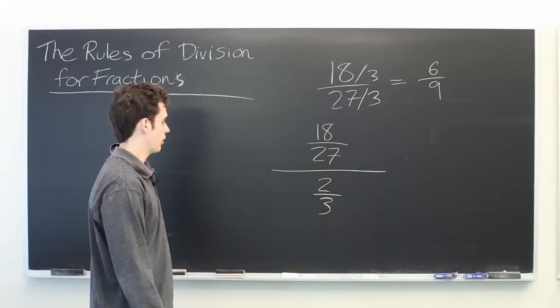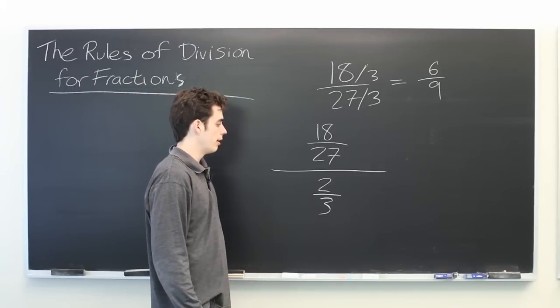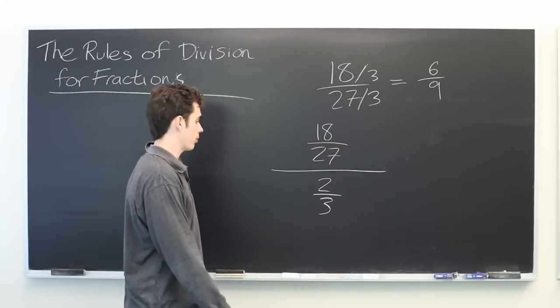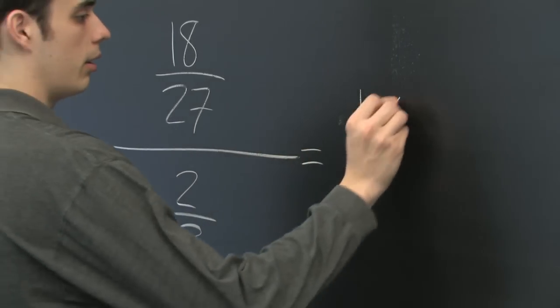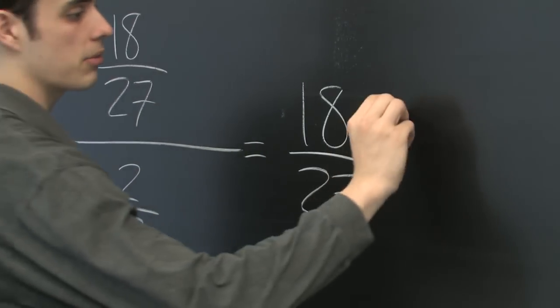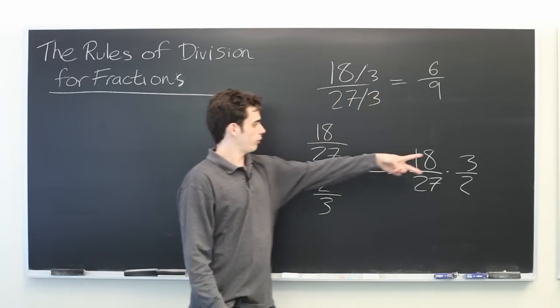Well, this is confusing looking. Luckily, there's a very simple formula for dividing by fractions. All you have to do is multiply by the reciprocal. So this is the same thing. It's 18 over 27 times 3 over 2. Just flip it over.